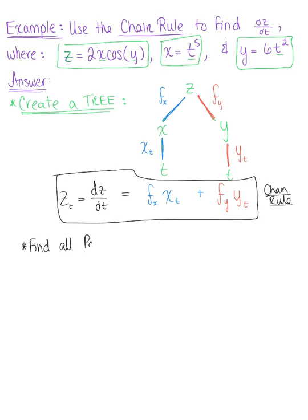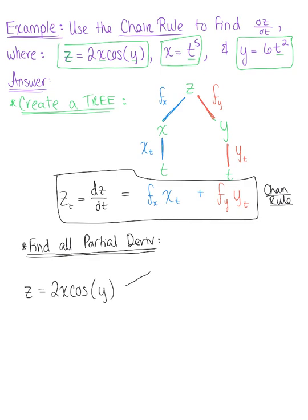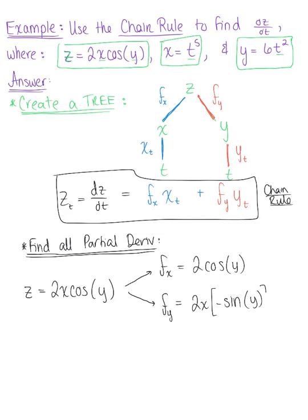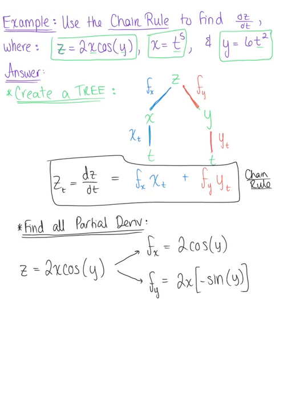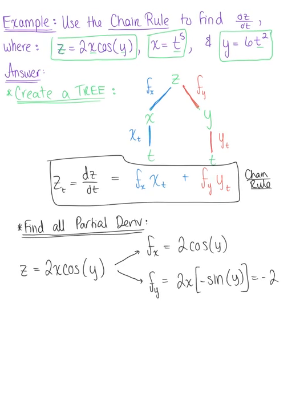So let's find all partial derivatives. Starting with z equal to 2x times cosine of y, the partial derivative with respect to x is 2 times cosine of y. The partial derivative with respect to y is 2x — holding that as a constant — and the derivative of cosine gives us minus sine of y, so we can rewrite this as minus 2x sine of y.